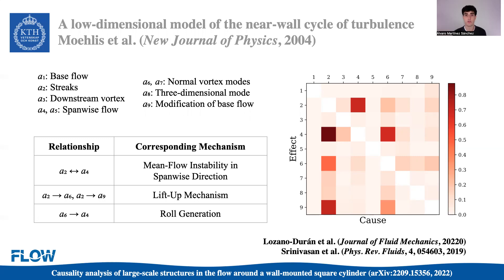They developed a reduced-order model consisting of nine modes representing the base flow, the longitudinal streaks, the downstream vortex, the spanwise flow, the normal vortex modes, the three-dimensional mode, and a new mode accounting for the modification of the base flow as a result of the turbulent topology. We applied the causality matrix to the temporal signals of each of these modes and obtained very similar results to those reported by Lozano-Durán and others in a turbulent channel flow. These findings suggest that using this entropy-based transfer entropy approach, we can extract the most relevant causal interactions between modes of a highly nonlinear system. More details about predictions with deep learning of temporal dependencies in this low-dimensional model can be found in the work of Rini-Vassan and others.